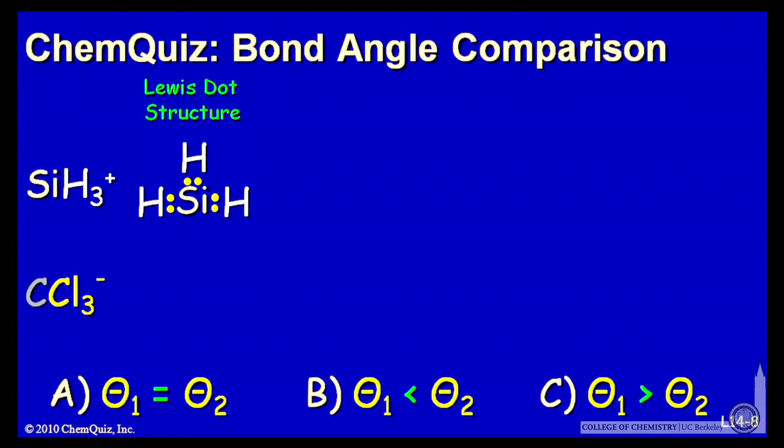The Lewis electron dot structure for SiH3+. Clearly we have a steric number of three for silicon, three hydrogens that it has to accommodate.